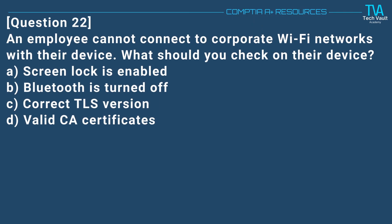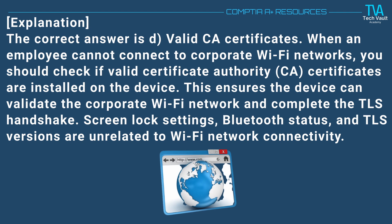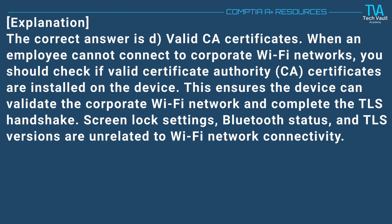Question 22. An employee cannot connect to corporate Wi-Fi networks with their device. What should you check on their device? A. Screen lock is enabled. B. Bluetooth is turned off. C. Correct TLS version. D. Valid CA certificates. The correct answer is D. Valid CA certificates. When an employee cannot connect to corporate Wi-Fi networks, you should check if valid certificate authority CA certificates are installed on the device. This ensures the device can validate the corporate Wi-Fi network and complete the TLS handshake. Screen lock settings, Bluetooth status, and TLS versions are unrelated to Wi-Fi network connectivity.